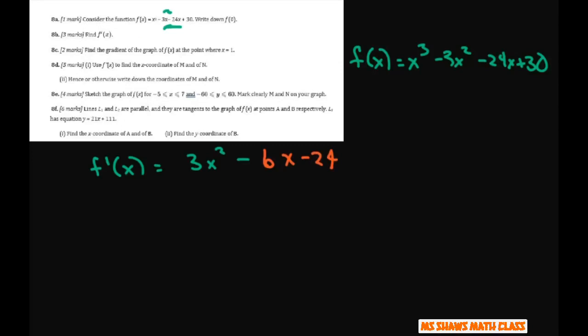All right. Find the gradient of the graph at the point where x is 1. So when you plug in 1, you're going to get f prime of 1 equals 3 times 1 squared minus 6 times 1 minus 24. And this is going to give you negative 27. All right. So there's that.